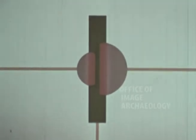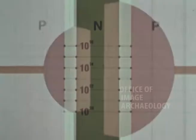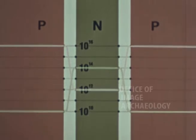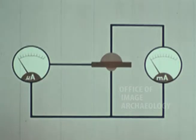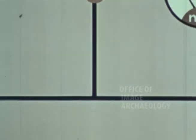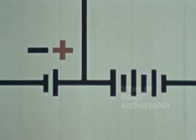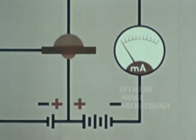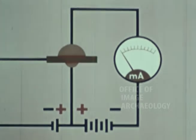In a PNP transistor with no external voltage applied, the concentration graphs of majority and minority carriers in the neutral parts of the P and N regions are horizontal, and no current flows in the external circuit. When a forward voltage is applied to the emitter-base junction together with a reverse voltage to the collector-base junction, a large current flows in the collector circuit and a very small current flows in the base circuit.